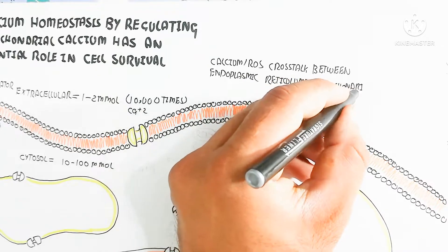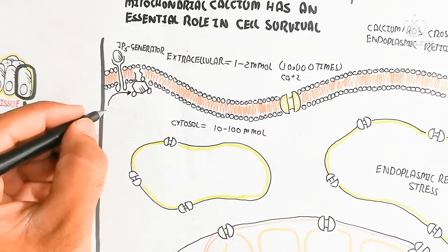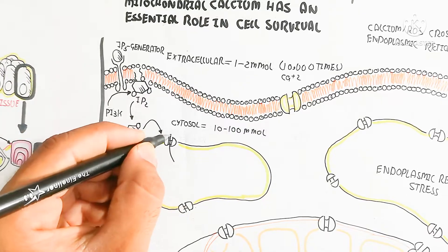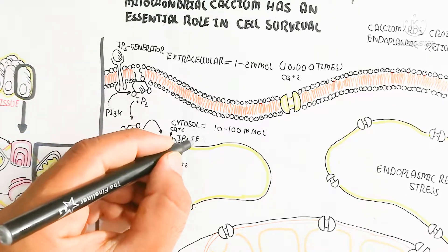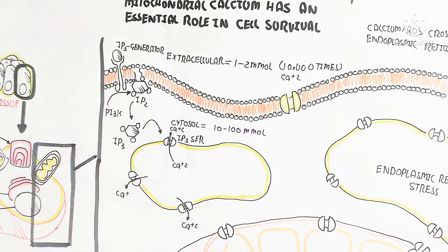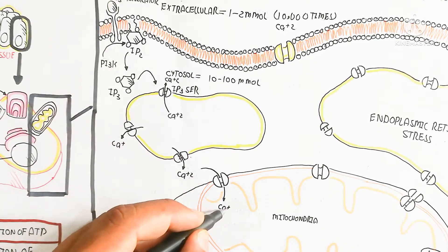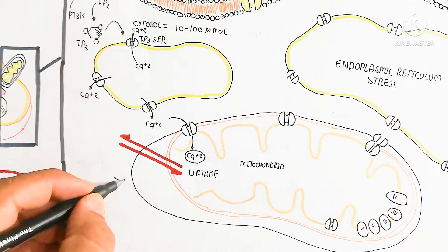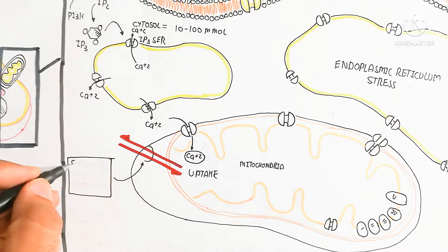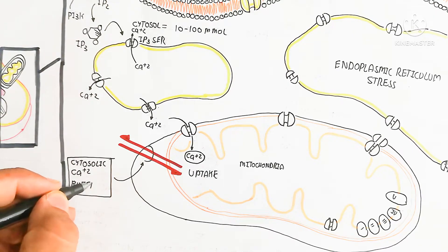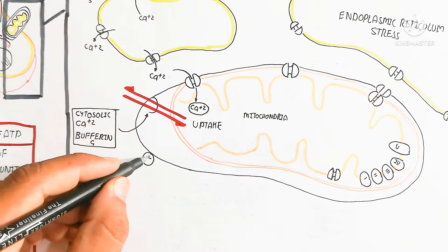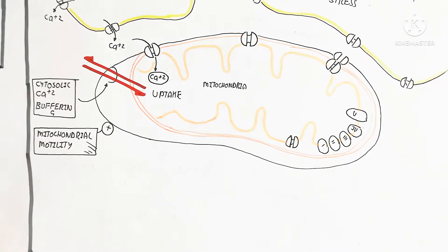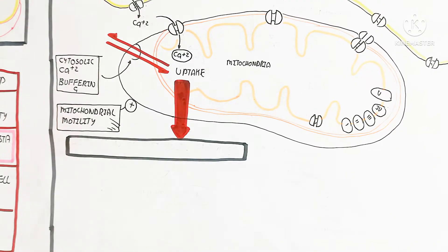The calcium and reactive oxygen species cross-talk between the endoplasmic reticulum and mitochondria is important: when cell damage occurs, more reactive oxygen species are produced, which triggers disturbance in calcium homeostasis. IP2 is converted to IP3 through the PI3K pathway, and diacylglycerol conversion activates IP3-sensitive channels, leading to efflux of calcium. This increases cytoplasmic calcium, which then enters the mitochondria — a process called cytosolic calcium buffering — and mitochondrial motility depends on calcium.